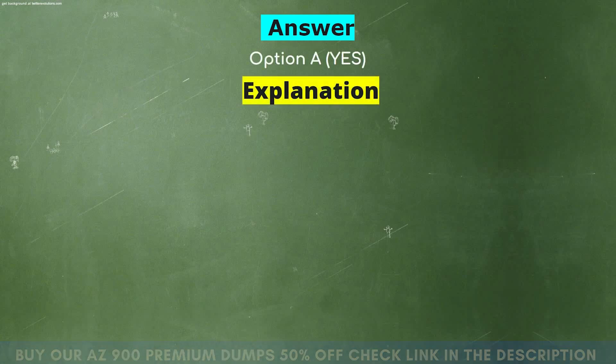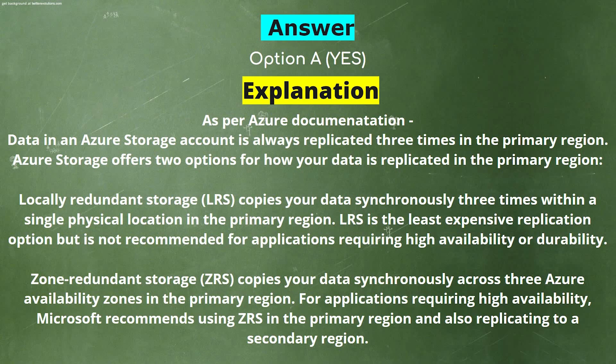Explanation. As per Azure documentation, data in an Azure Storage account is always replicated three times in the primary region. Azure Storage offers two options for how your data is replicated in the primary region. Locally redundant storage (LRS) copies your data synchronously three times within a single physical location in the primary region.